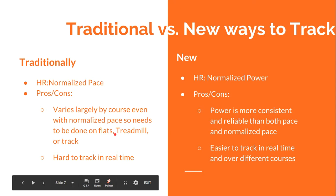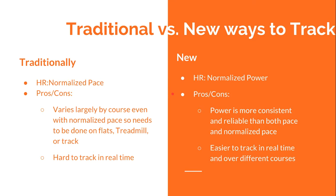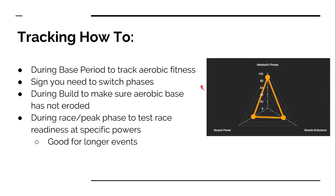With a running power meter, you can use heart rate to normalized power. The benefit is that power is more consistent and reliable than both pace and normalized pace. It's also easier to track in real time over different courses — similar to how easy it is to monitor power versus speed when cycling. It's a lot easier to monitor and manipulate your power than to calculate normalized pace over the course of a run.